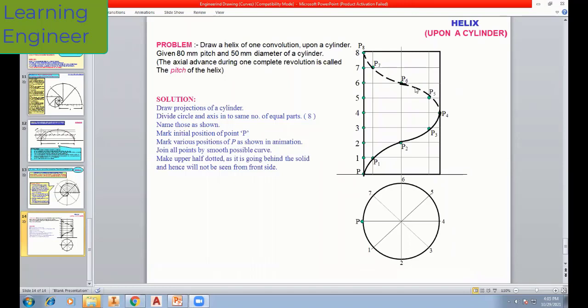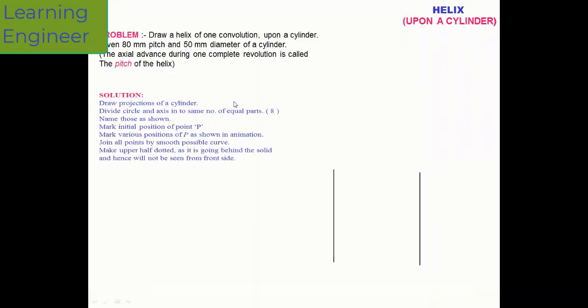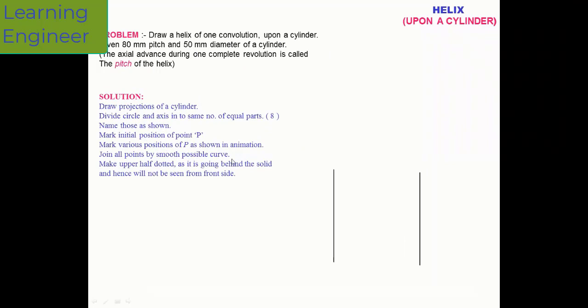When we open that particular thread of one complete revolution, that is known as lead. The helix will look like the unrolled thread of one complete revolution. Now let's understand how to proceed with drawing the helix. The steps to follow for drawing the helix are listed.